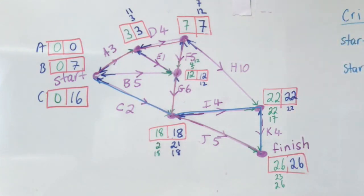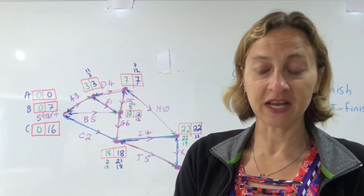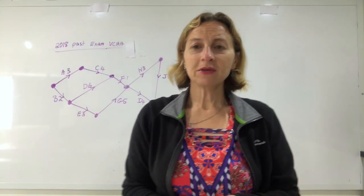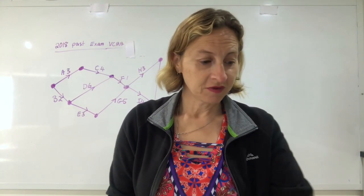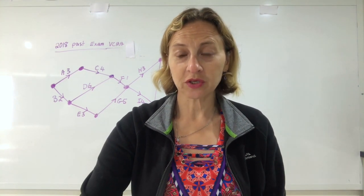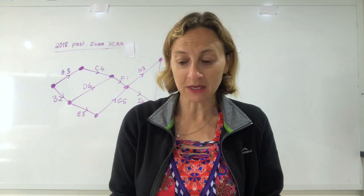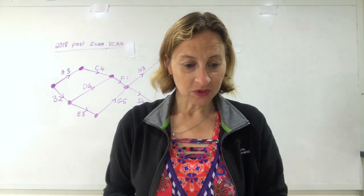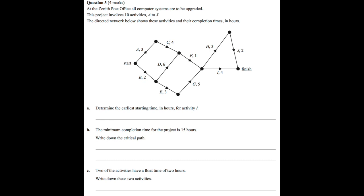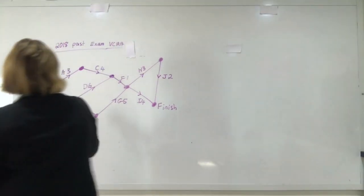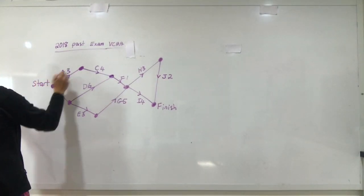As you can see, there can be more than one critical path — sometimes only one, but sometimes more, so the person next to you might get a different answer and that's fine. Here is a past exam paper question from the VCAA in Victoria. At the Zenith Post Office all computer systems are to be upgraded. This project involves 10 activities A to J. The directed network shows the activities and their completion times in hours, with a start and a finish, and all the activities in between.